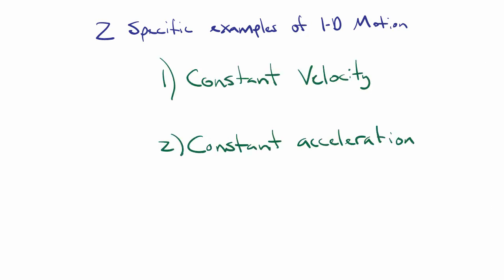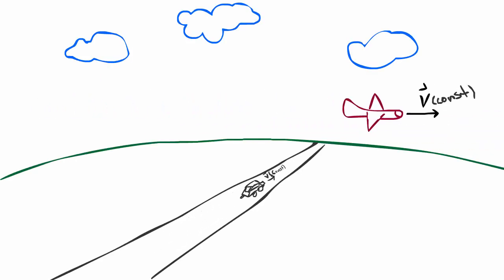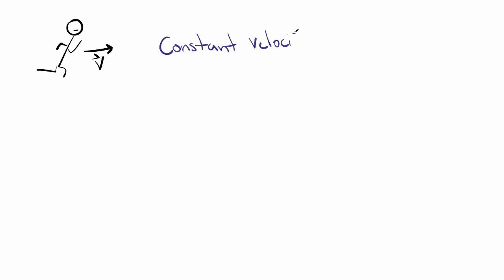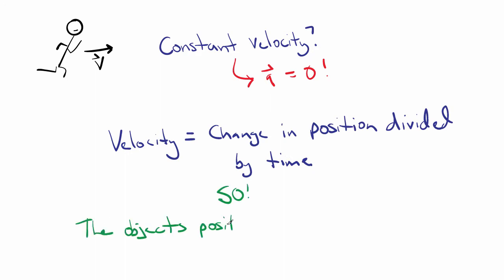Motion involving an object traveling at a constant velocity is pretty common. Airplanes traveling in a straight line, cars traveling down the highway, you can even approximate the horizontal motion of a baseball as constant velocity motion. For any object that has a constant velocity, its acceleration must be zero. Since the velocity isn't changing, the object's position must be changing at a constant rate.